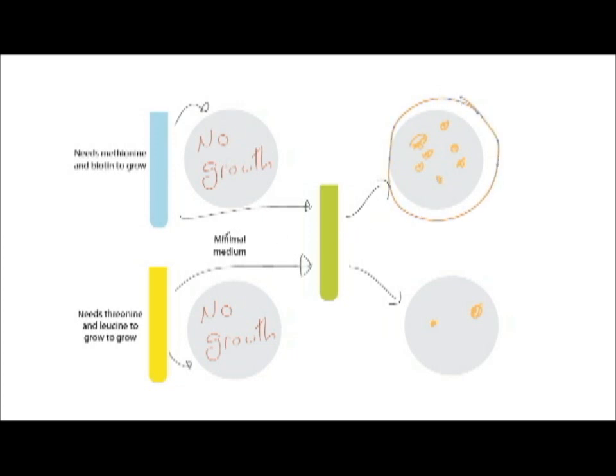However, because of conjugation, this strain can produce methionine and biotin, and this one can produce threonine and leucine.